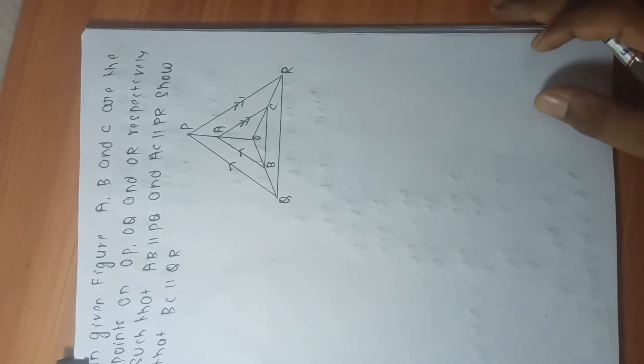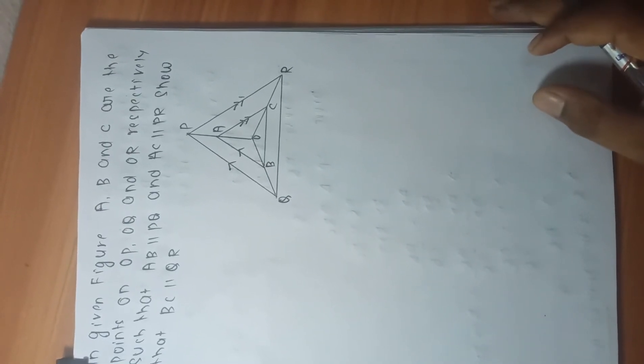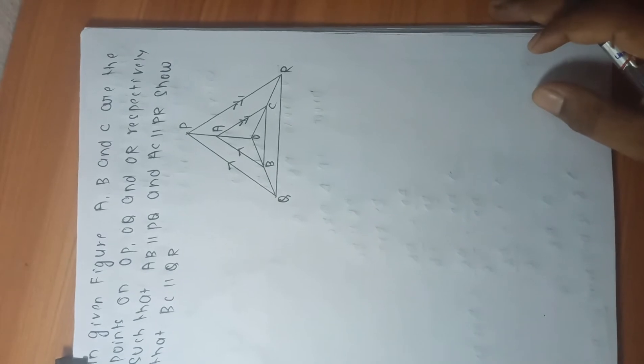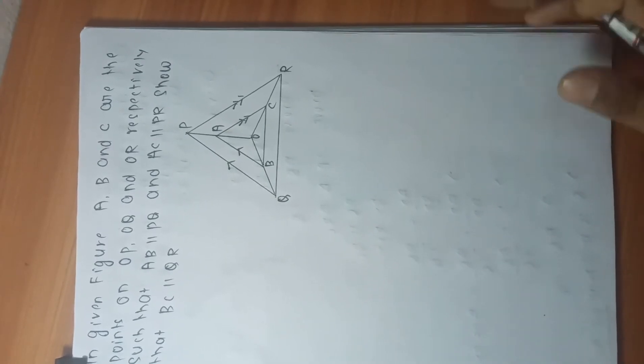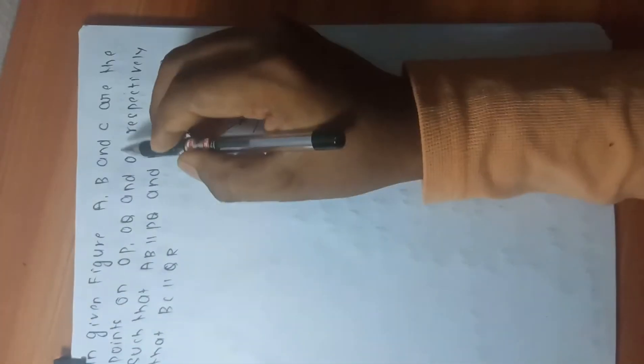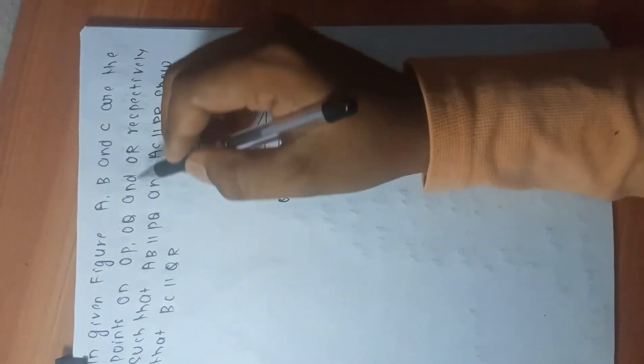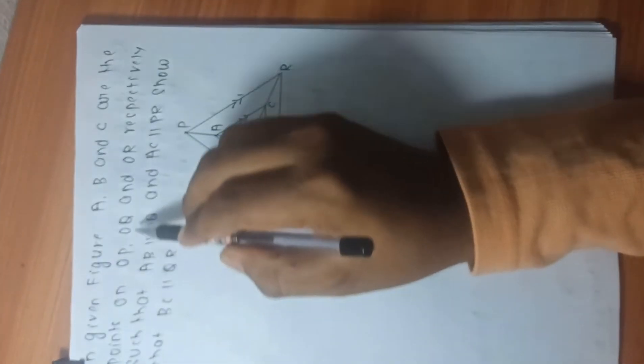Hello students, we are going to solve question number 6 from NCERT exercise 6.2. In the given figure, A, B and C are points on OP, OQ and OR respectively.